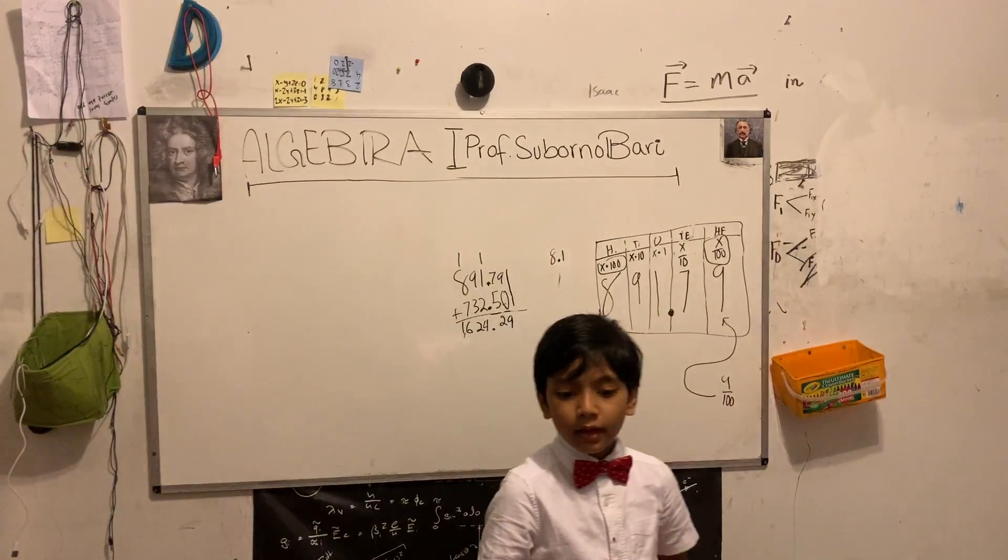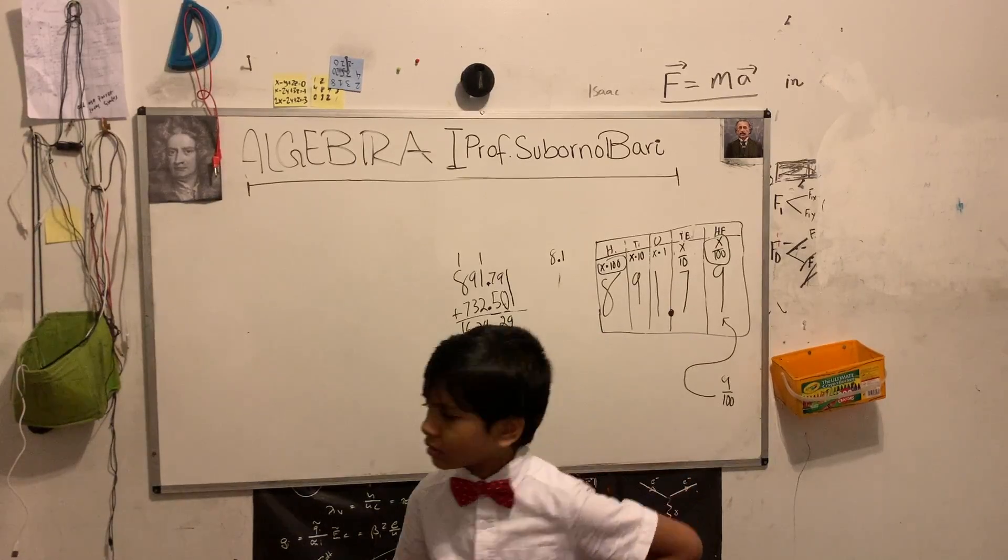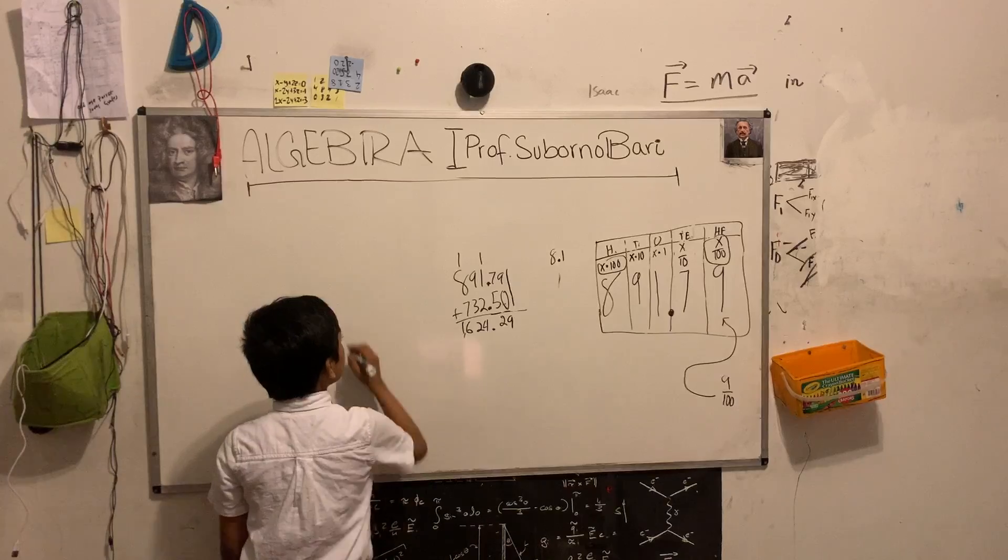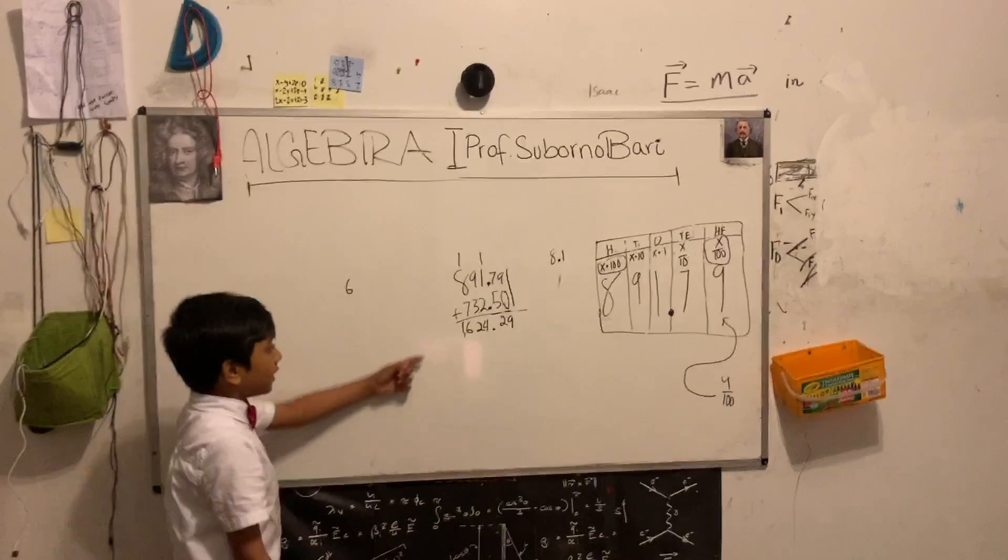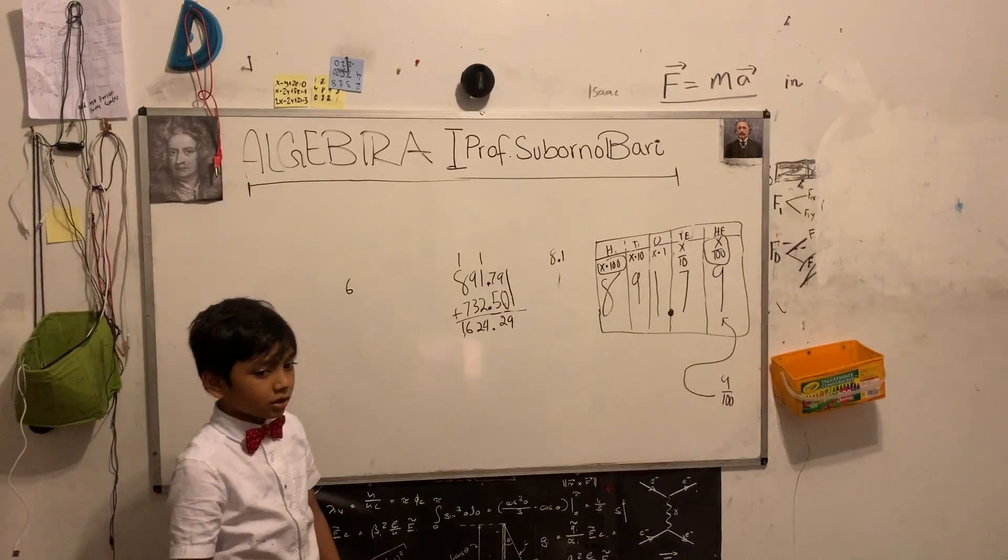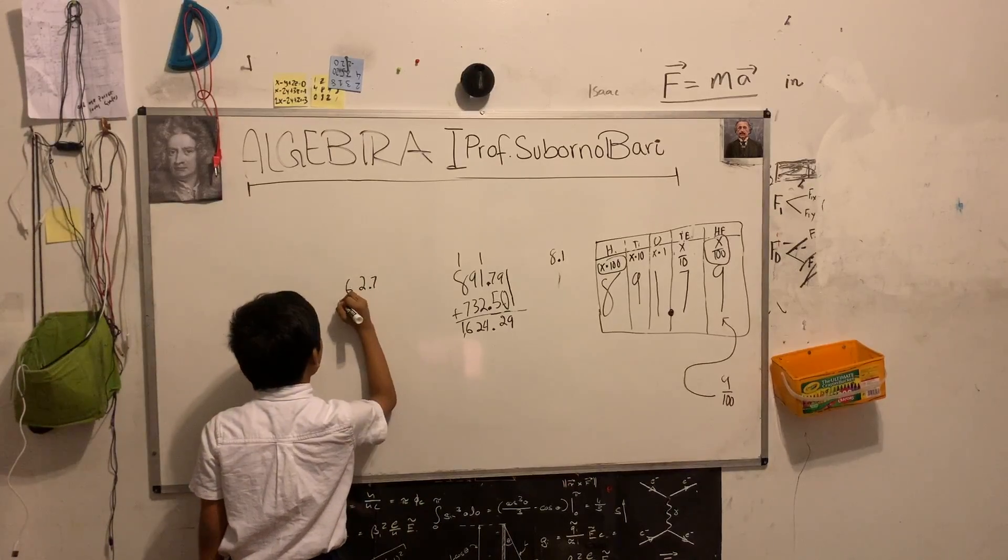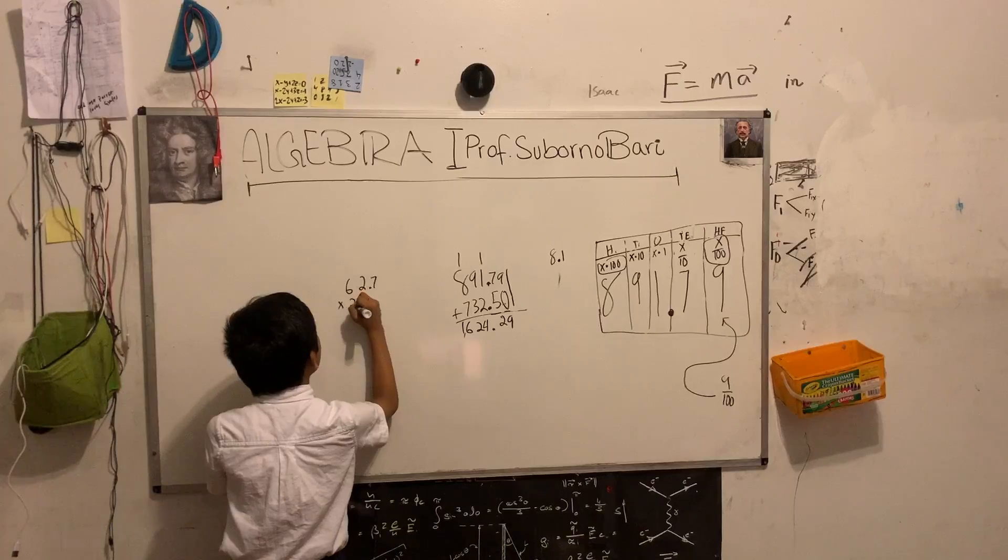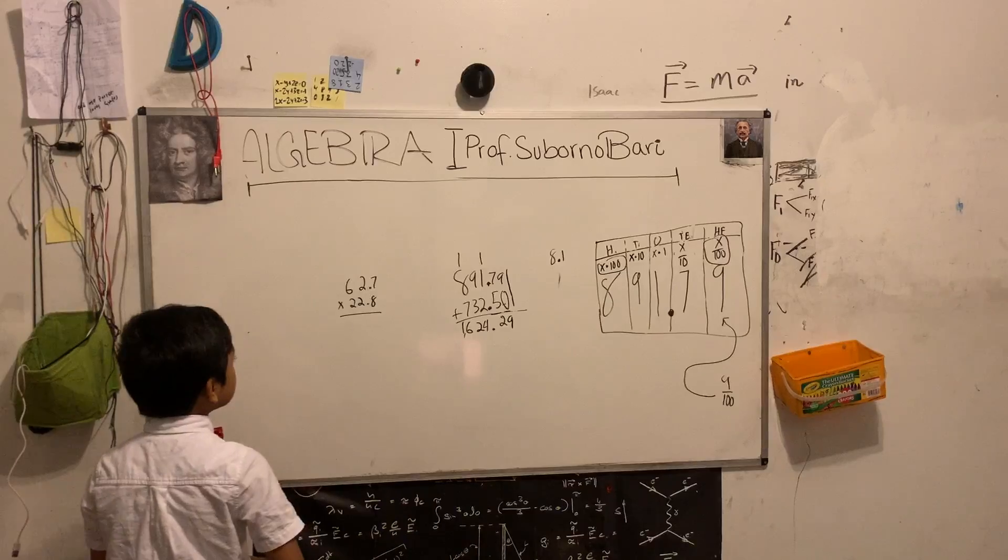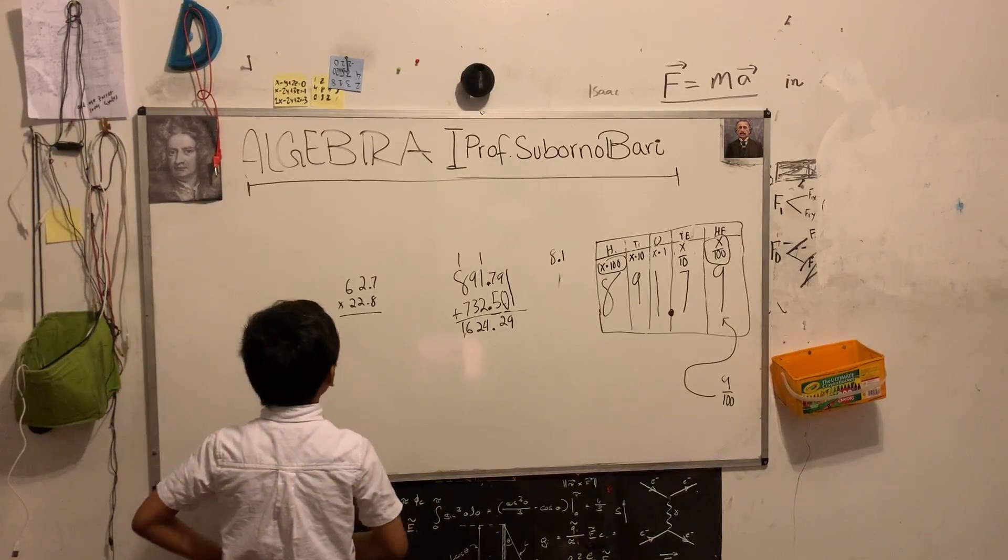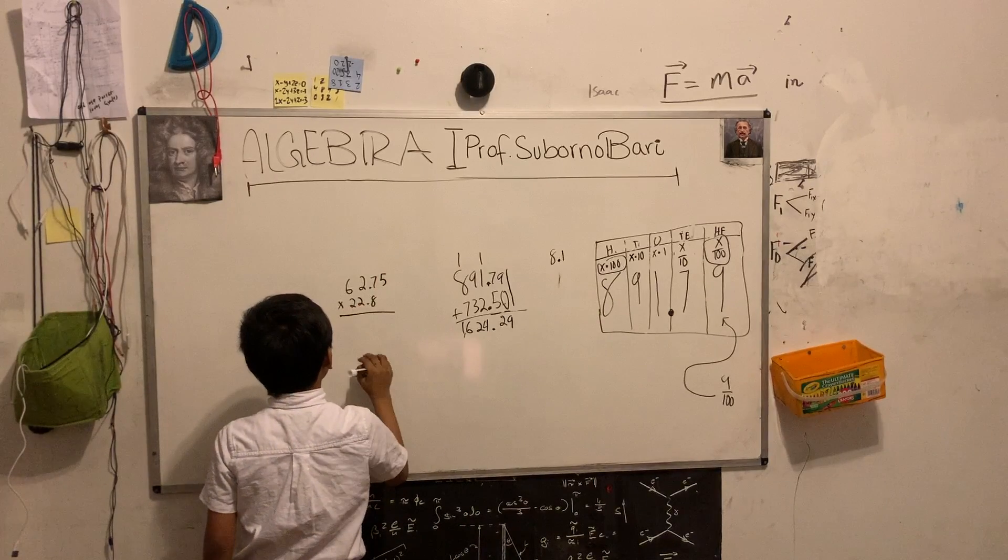But when multiplying and dividing, things get a little different. Now let's try some smaller numbers for multiplying and dividing, because these ridiculous numbers are going to be too difficult. So 62.75 times 22.8. Now this looks a lot less chaotic. But no, no, 62.75. I'm saying but subscribe YouTube.